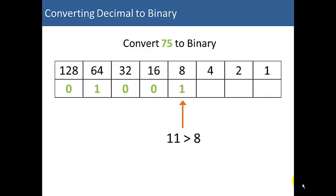11 is greater than 8. So, we're going to put a 1 under the 8. Subtract 8 from 11 to get 3. And we'll move to the 4 bit. 3 is less than 4, so we'll place a 0 there. 3 is greater than 2, so we'll put a 1 under the 2's digit. We're going to subtract 2 from 3. We get 1, and we'll place the 1 in the 1's digit.